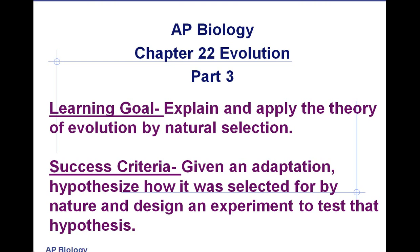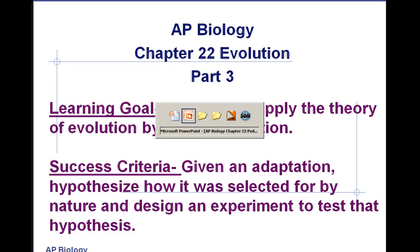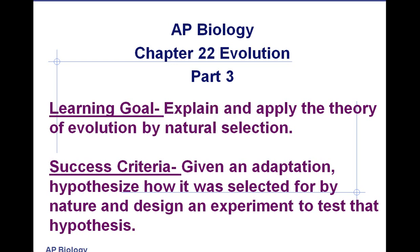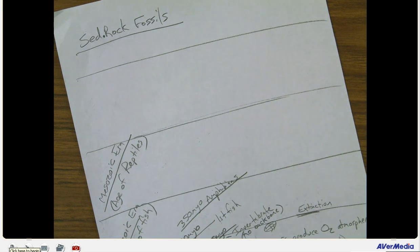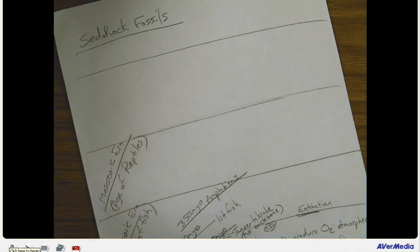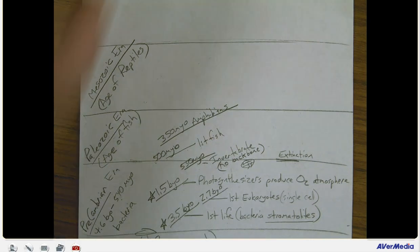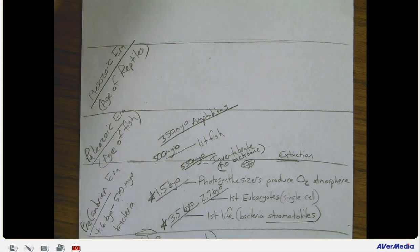AP Biology, Chapter 22, Evolution, Part 3. At this point, we're going to continue on with our notes on the sedimentary rock fossils we find in the different layers of Earth.